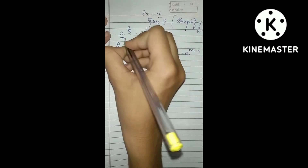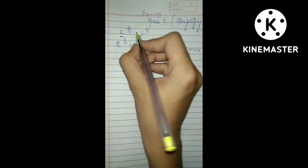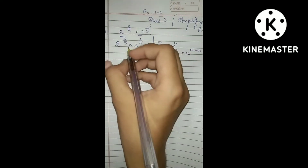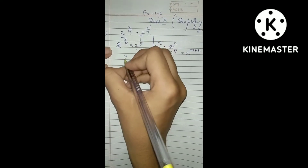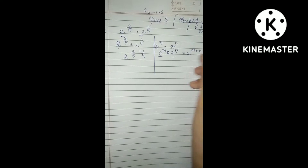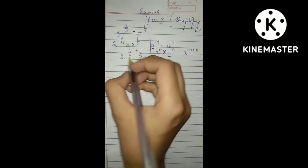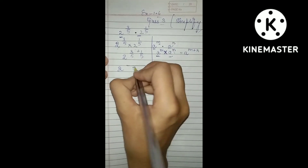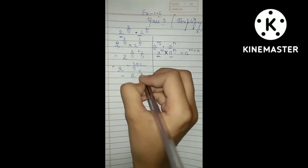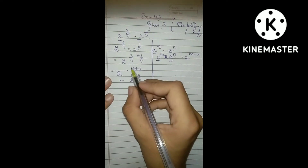Let's solve Part 1: 2 raised to the power 3 by 5, multiplied by 2 raised to the power 1 by 5. Since the base is the same, we add the powers. Taking the LCM and adding: it will be 2 raised to the power 4 by 5.